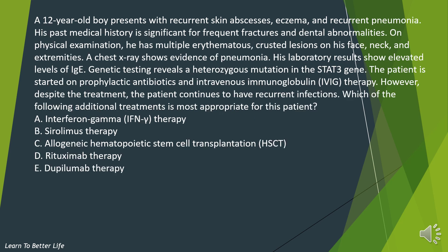A 12-year-old boy presents with recurrent skin abscesses, eczema, and recurrent pneumonia. His past medical history is significant for frequent fractures and dental abnormalities. On physical examination, he has multiple erythematous crusted lesions on his face, neck, and extremities. A chest X-ray shows evidence of pneumonia, and his laboratory results show elevated levels of IgE. Genetic testing reveals a heterozygous mutation in the STAT3 gene. The patient is started on prophylactic antibiotics and intravenous immunoglobulin therapy; however, despite the treatment, the patient continues to have recurrent infections.